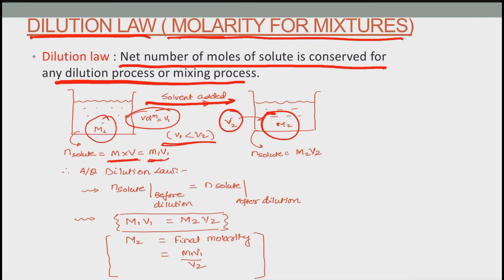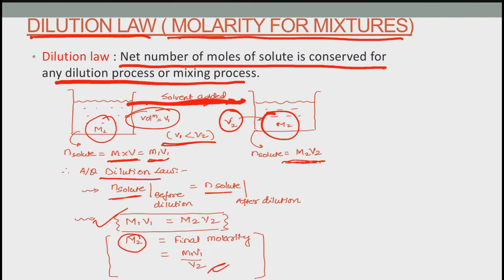Finally M2×V2 is the number of moles of solute. Since we have only added solvent and not altered the amount of solute, the number of moles before and after dilution must be equal. Hence M1V1 = M2V2, and the final molarity M2 can be calculated using this expression.